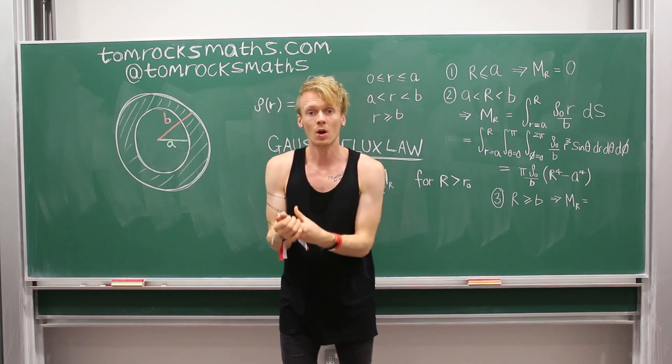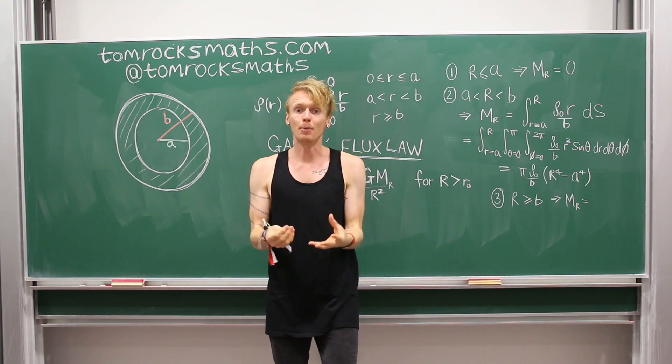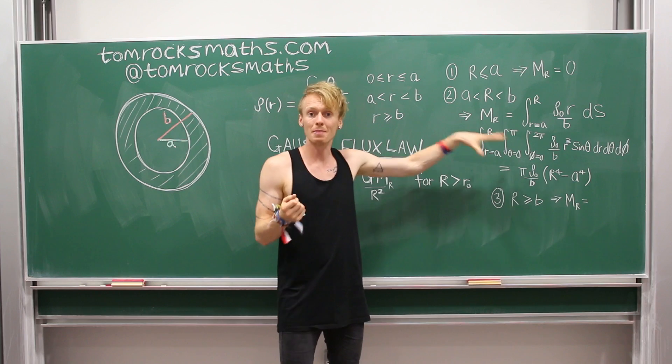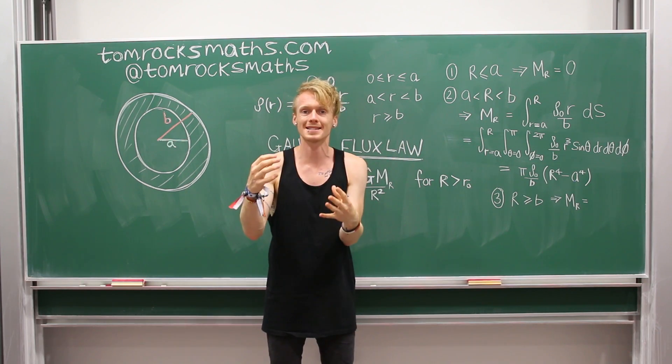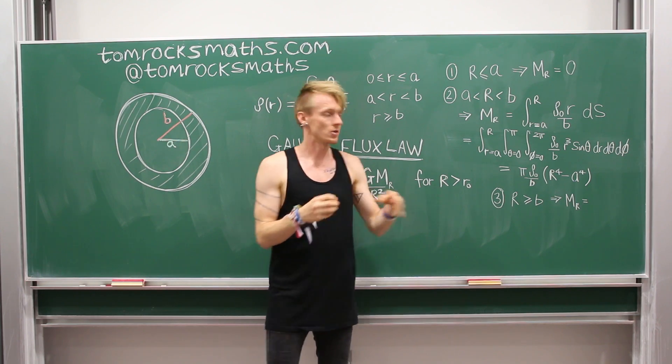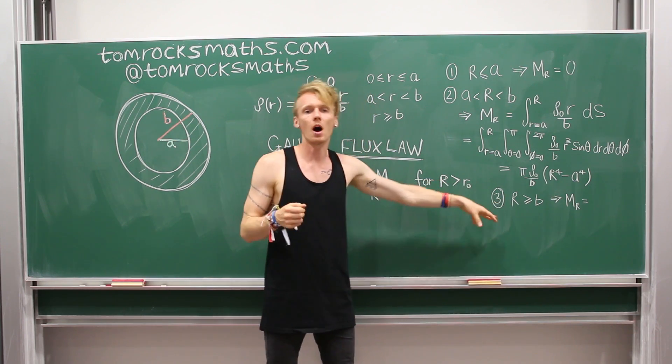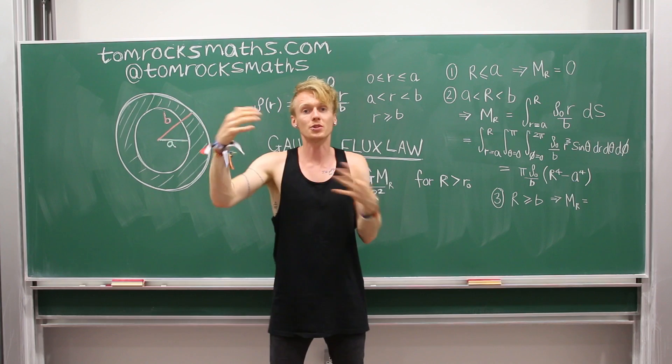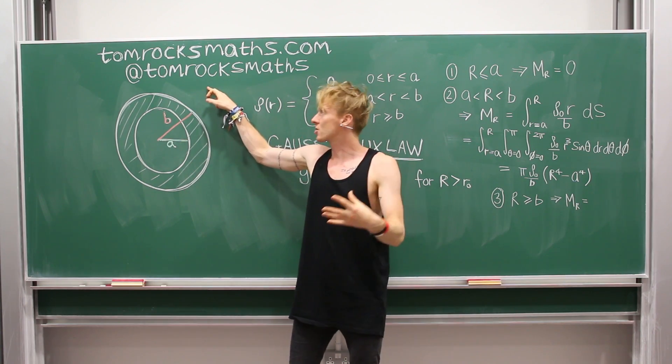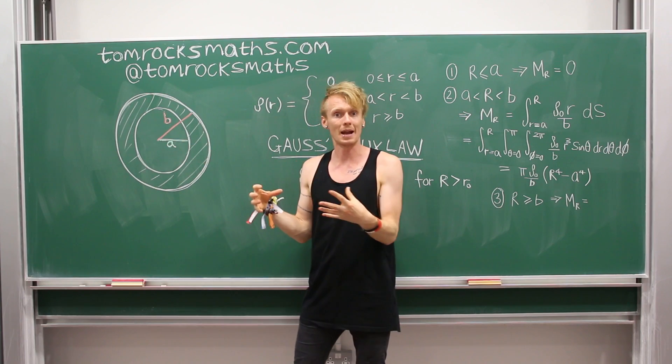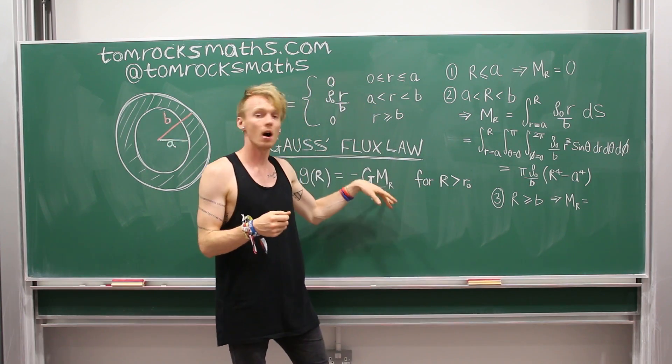And the last part is also relatively simple because we've worked out the middle one. Because all that it depends on is the total mass that's inside where you're standing. So if we're standing at a distance capital R, which is now greater than or equal to B, so we're out here somewhere, the mass is just simply the entire mass of the whole planet. That's what this MR will be.